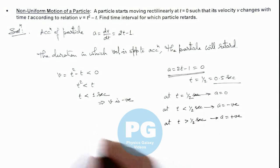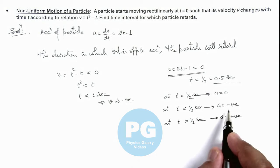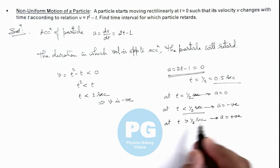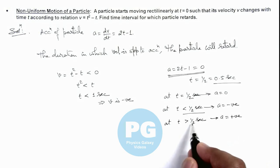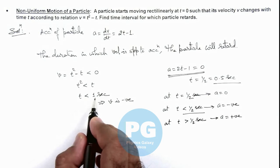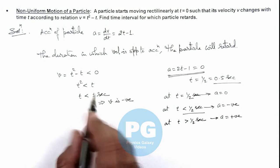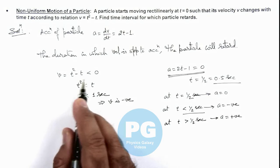Acceleration is negative for t < 0.5 seconds. When t > 0.5 seconds onward and velocity is negative, acceleration is positive. Velocity is negative when t < 1 second. If t > 1 second, the value of velocity becomes positive.